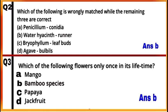Question 3: Which of the following flowers only once in its lifetime? Out of the four given plants, in option B, bamboo species flowering takes place once in its lifetime, generally after 50 to 100 years.